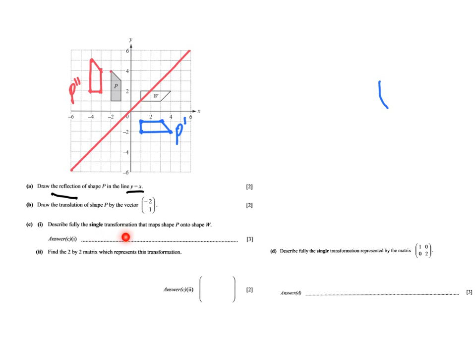Part c says: describe fully the single transformation that maps P onto shape W. You should know the types of transformations. Can it be a translation? No, because that will just move P in a direction but won't rotate it. Could it be a reflection? I don't see any diagonal line that reflects P onto W. It's certainly not an enlargement. So what is left is a rotation. I'm already going to write down 'rotation' — that's one point. But with rotation you must give extra information.